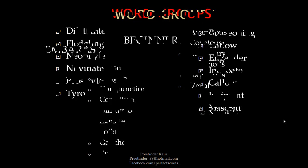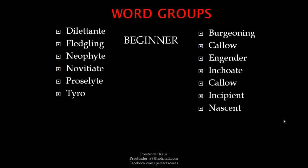The next group is that for beginner. You have dilettante, fledgling, neophyte, novitiate, proselyte, and tyro — novitiate and tyro can be used for beginner as well as innocent. Some more words for beginner are burgeoning, which means growing, callow, engender, inchoate, incipient, and nascent.